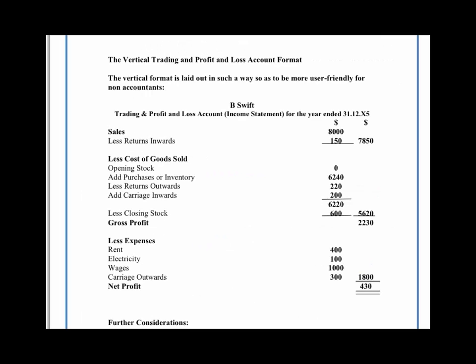If we look at our vertical trading and profit and loss account, or income statement, we can see very clearly that the carriage inwards is added to the cost of purchases. That makes sense because if you buy $6,240 worth of goods, return to your supplier $220, but had to pay another $200 to bring them from your supplier into your business, you have actually used up $6,220 worth of purchases. Why do we put carriage inwards into our trading account? Because it's linked to our purchases, so it makes sense to have it here.